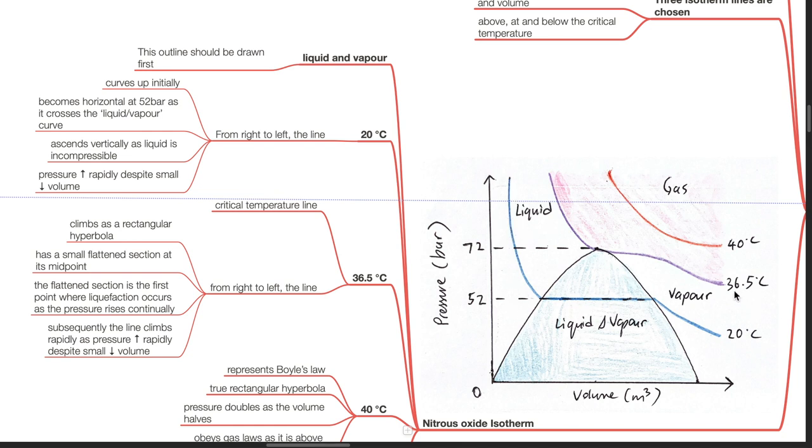The second curve is 36.5 degrees Celsius, the critical temperature line. From right to left, the line climbs as a rectangular hyperbola and has a small flattened section at its midpoint. The flattened section is the first point where liquefaction occurs as the pressure rises continually. Subsequently, the line climbs rapidly as pressure increases rapidly despite small decrease in volume.